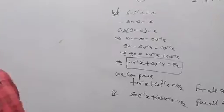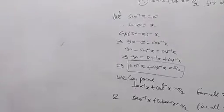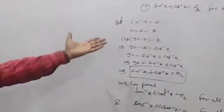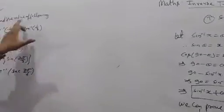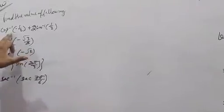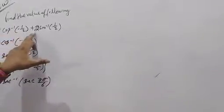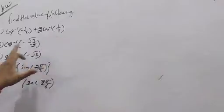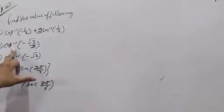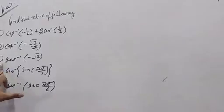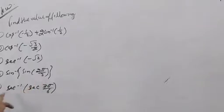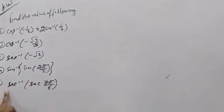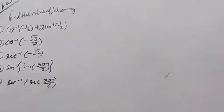Now I am going to give some homework questions: find the value of the following. First: cos inverse of minus 1 by 2 plus 2 sin inverse of 1 by 2. Second: cos inverse of minus root 3 by 2. Third: sec inverse of minus root 2. Fourth: sin inverse of sin 2 pi by 3. Fifth: sec inverse of 2 given pi by 6.